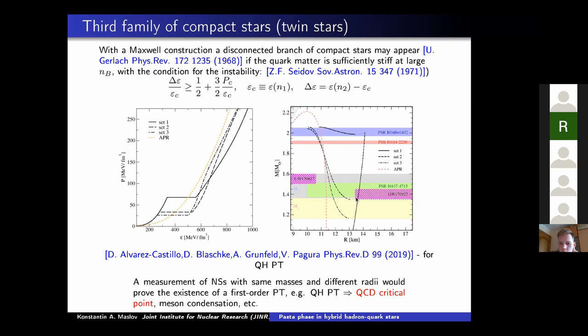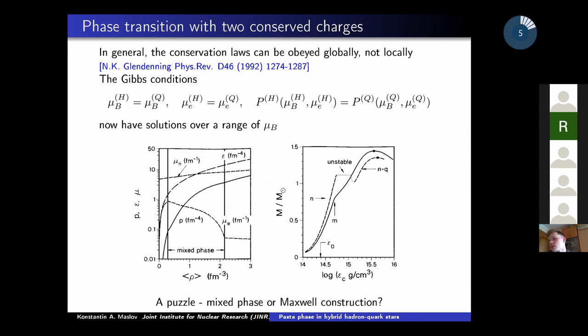Which in turn may lead to an appearance of a disconnected branch of compact stars on the mass radius relation, if this energy jump is large enough. Such configurations with similar masses and different radii are called twin stars. This branch may be called a third family of compact stars, being apart from neutron stars and white dwarfs. And a definite measurement of such neutron stars would mean that there exists a strong first-order phase transition, being that quark hadron phase transition or meson condensation or some other.